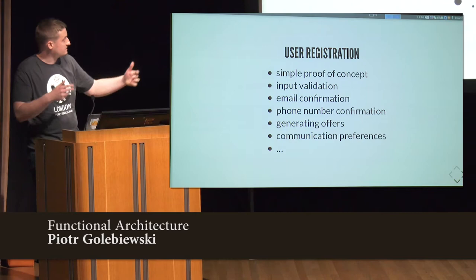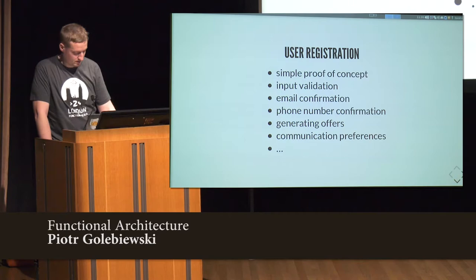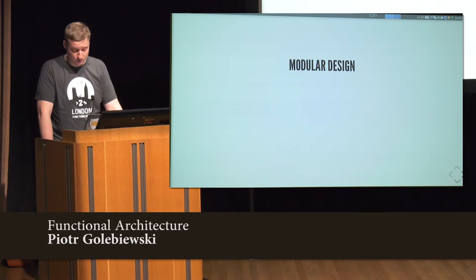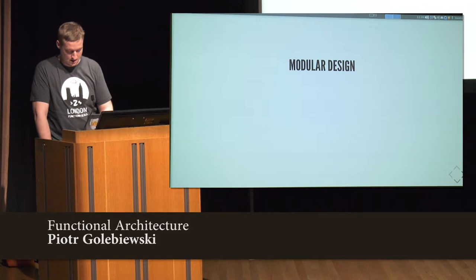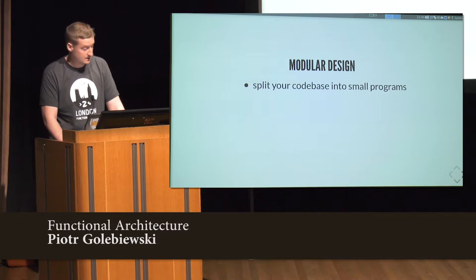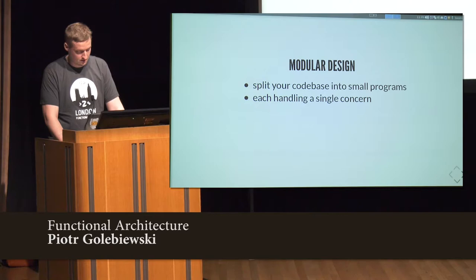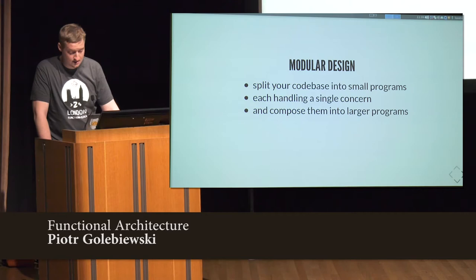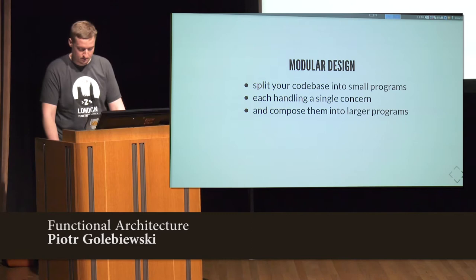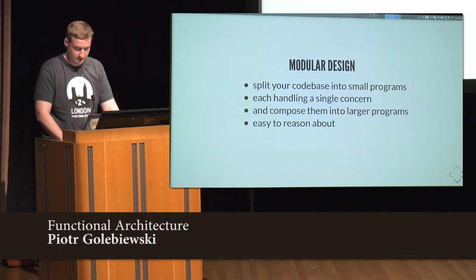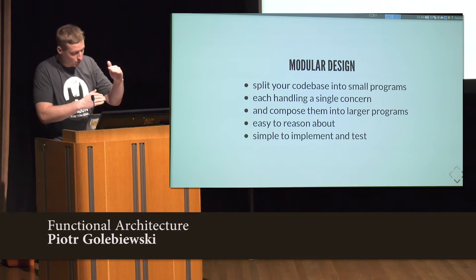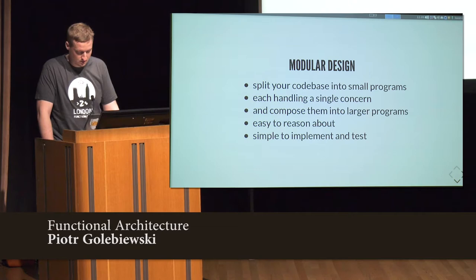We had to take a step back and refactor our code, because the other concerns dominated our code heavily and it wasn't easy to test. So how do we deal with complexity? The solution is modular design. We split our code base into smaller programs, and we will have each program handle a single concern, and then compose them into larger programs. Each of these smaller programs will be easy to reason about, easy to implement, and easy to test. The code will be very small — most likely a few lines.